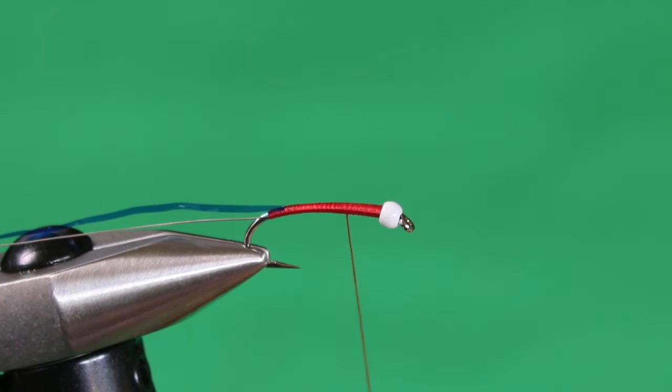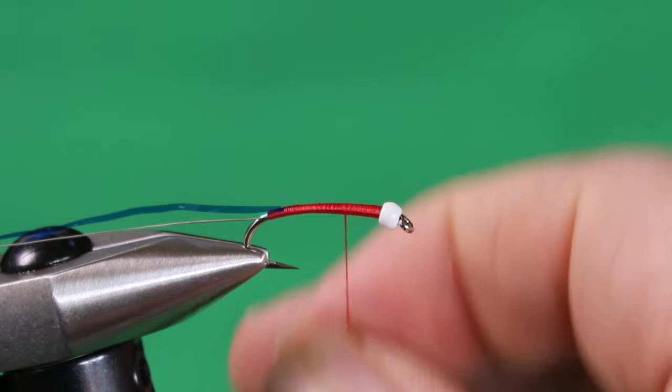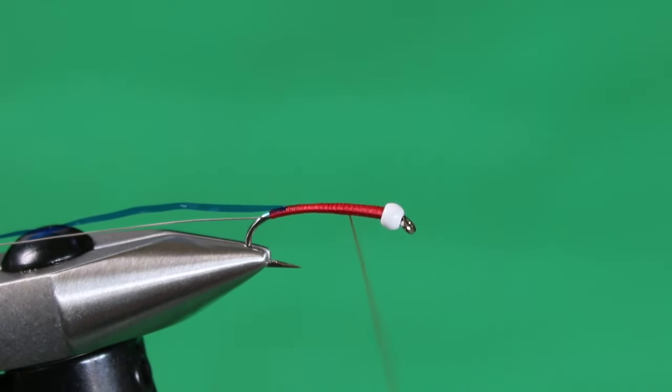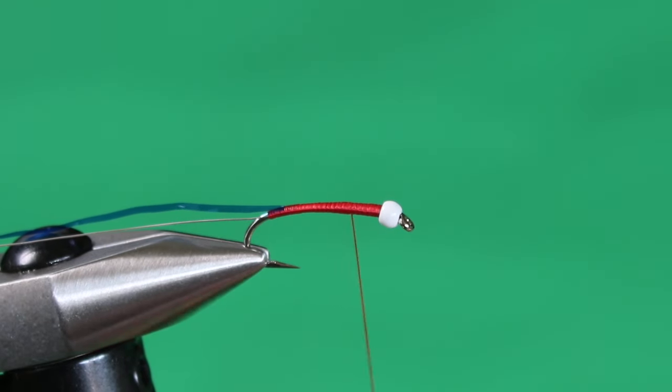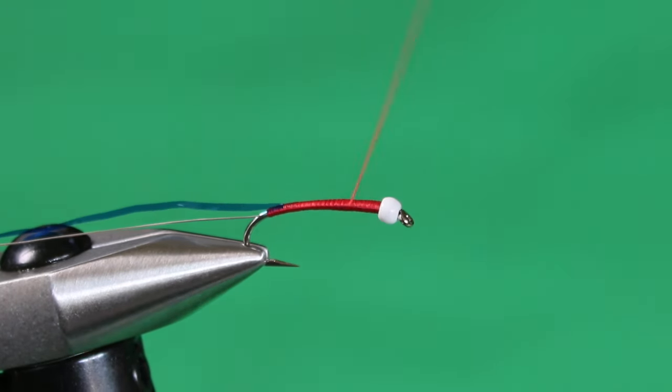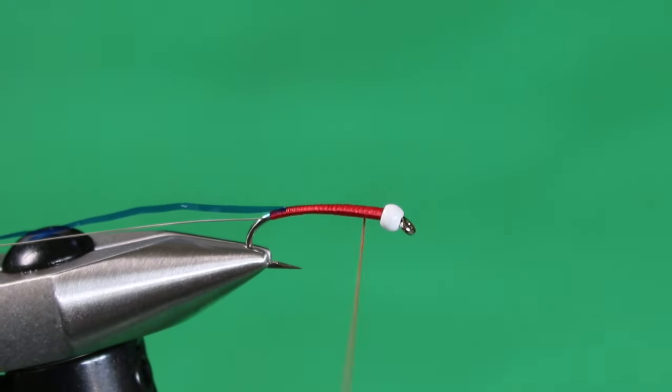This is just so we have a nice natural looking profile that the fish are used to seeing, because the shape or profile of your fly, no matter whether you're tying chironomids or dragonfly nymphs or water boatmen, backswimmers, leeches, is always important. It's one of the keys, at least it is for me. So we're just going to bring this up. I'm liking how that's looking.